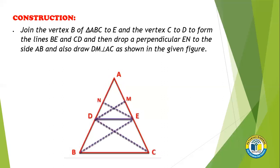Now we are going to do a construction. We will draw lines from point B to E and from C to D respectively. Also, in triangle ADE, we will draw a perpendicular EN on AD and DM on side AE respectively.